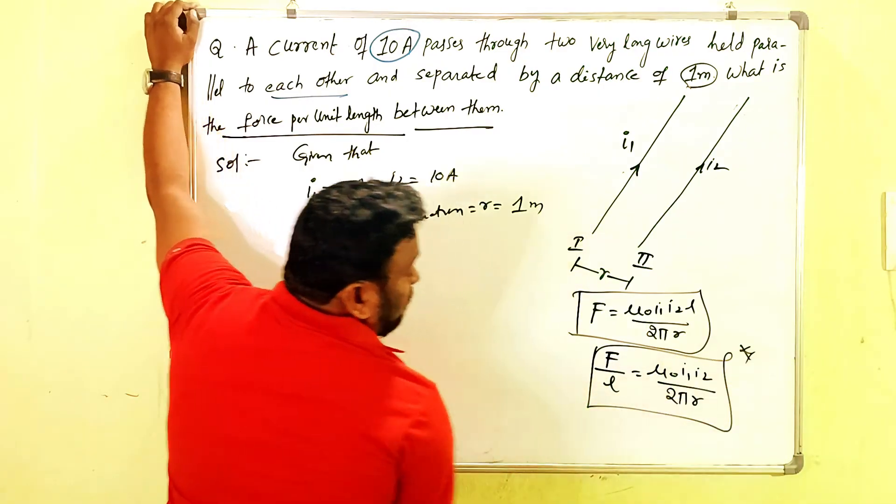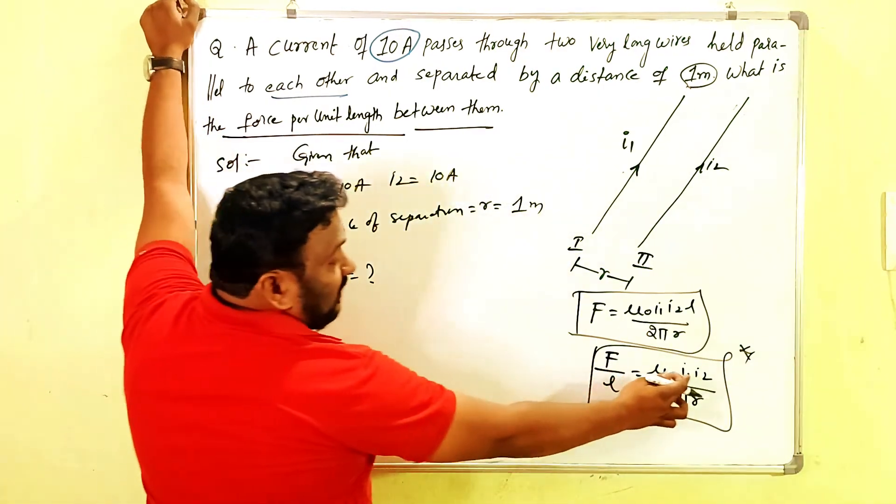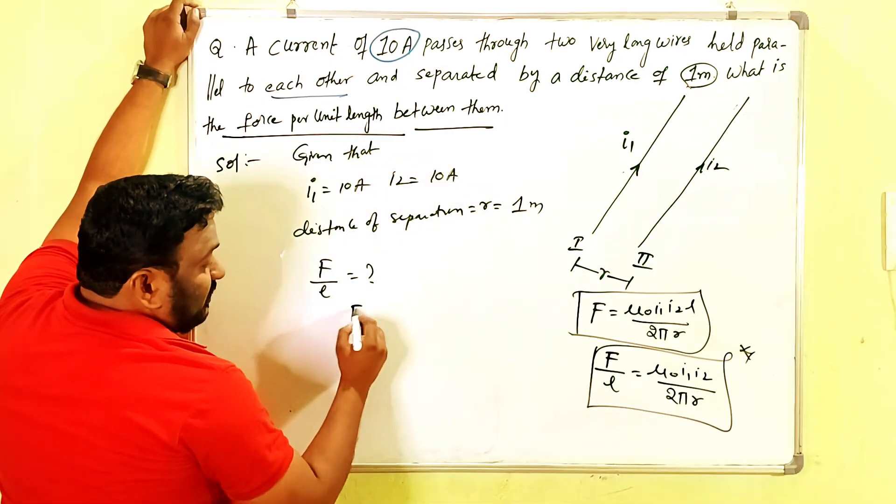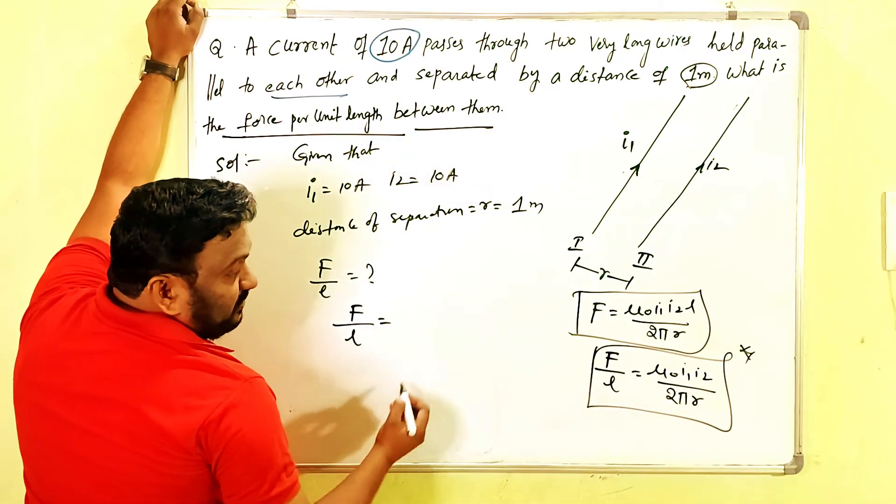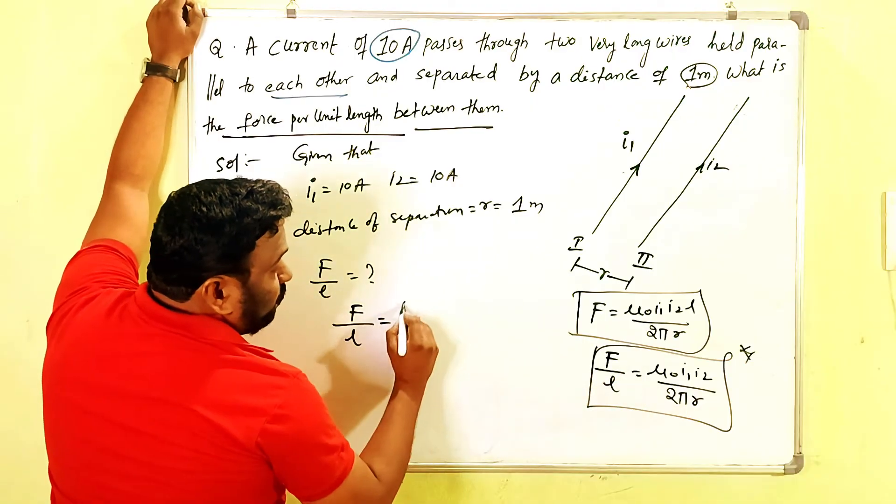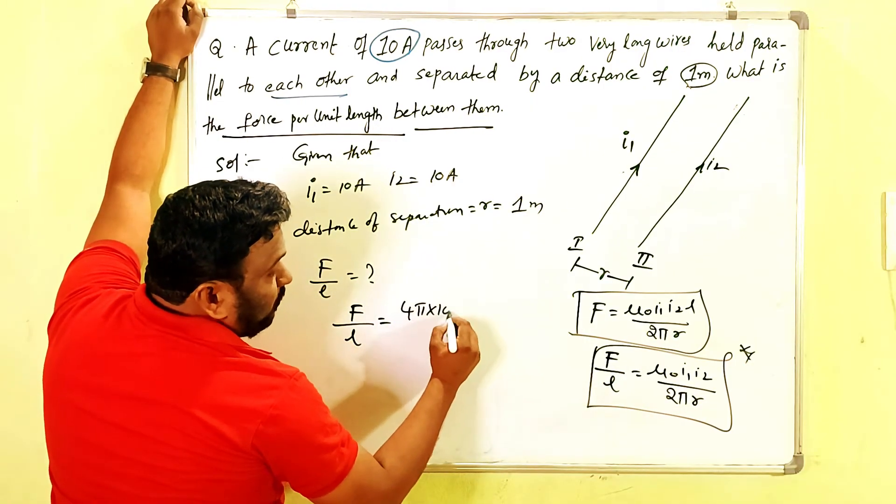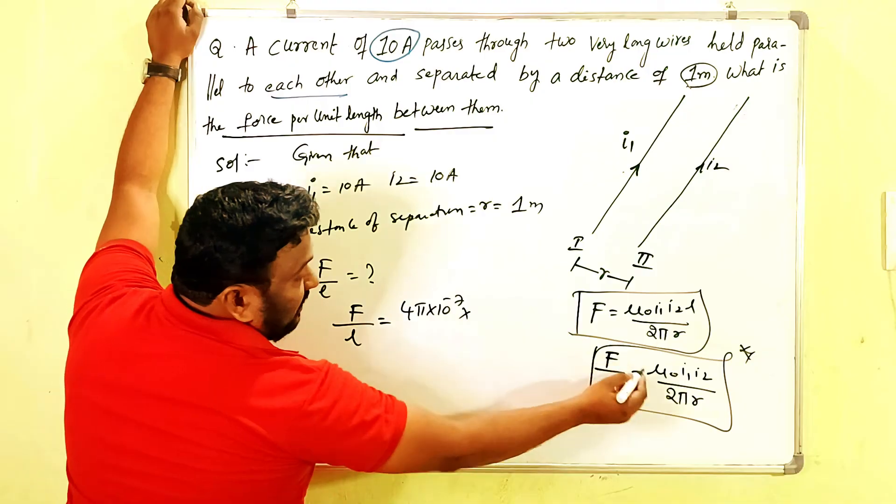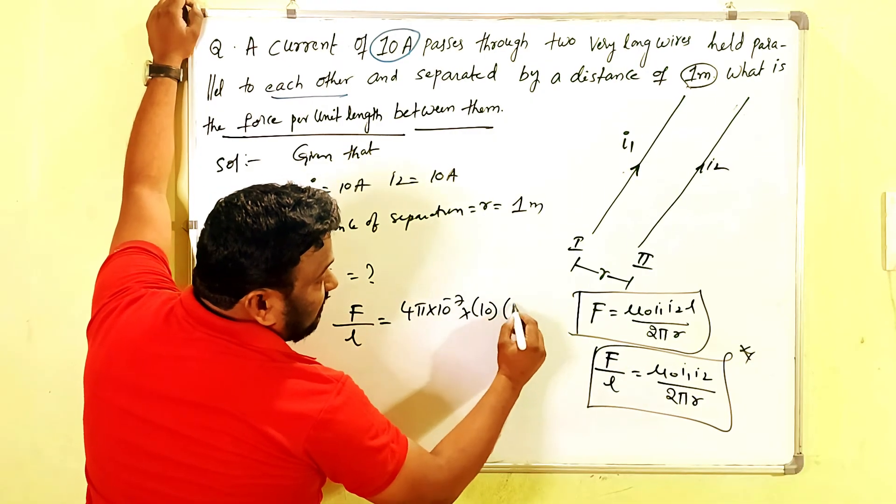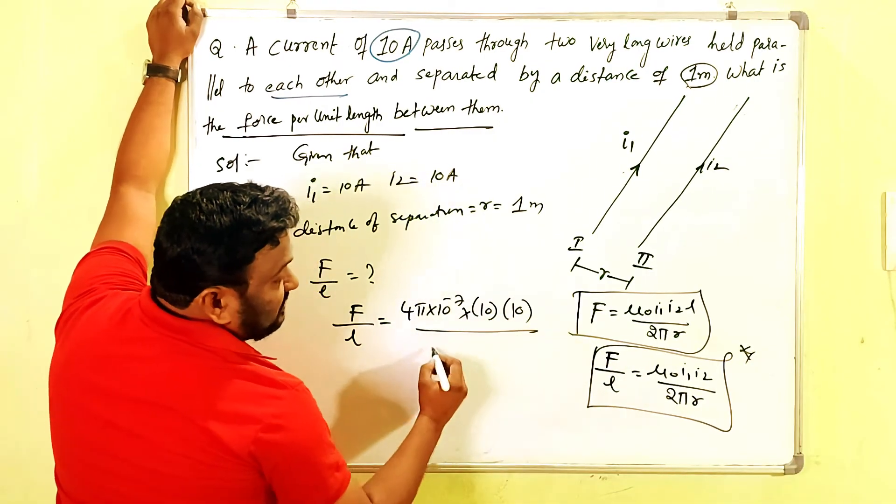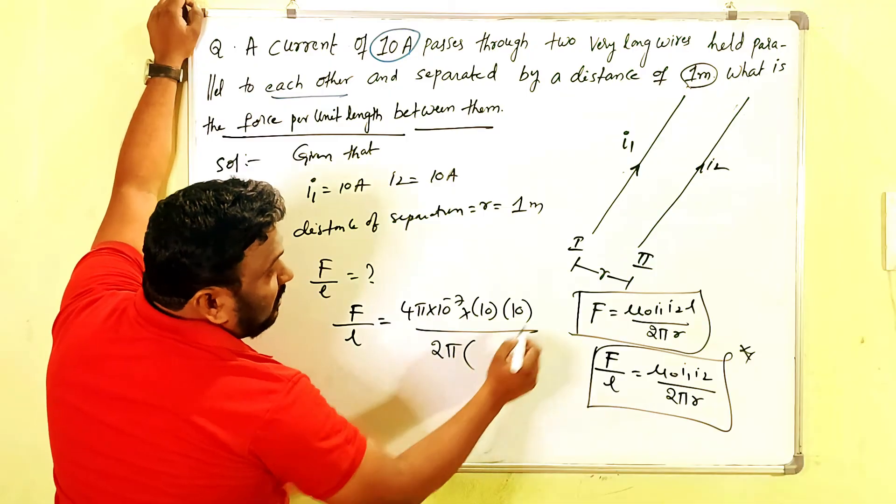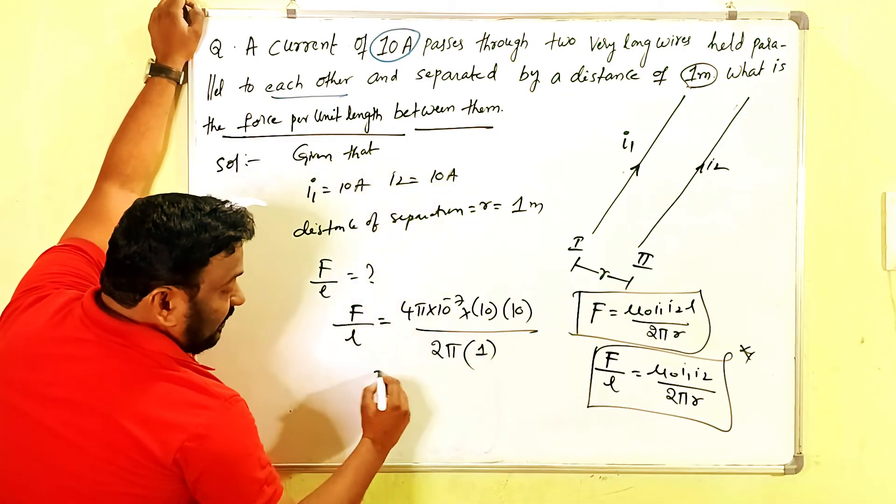Now, F/L equals μ₀i₁i₂/(2πr). Substitute here: F/L equals μ₀ means what? 4π × 10⁻⁷. And i₁ is what? 10 amperes. i₂ also 10 amperes. And 2π into r means what? This is 1.